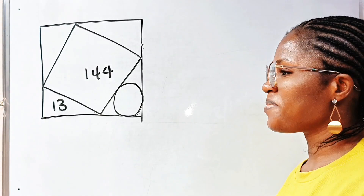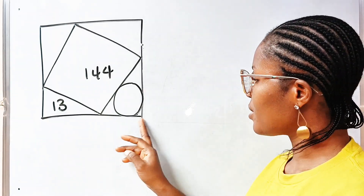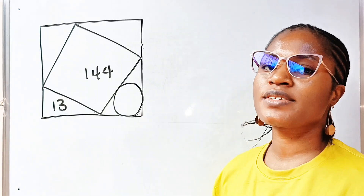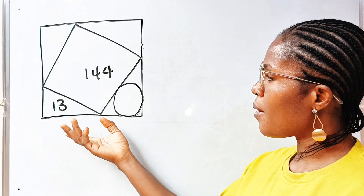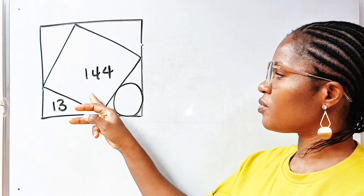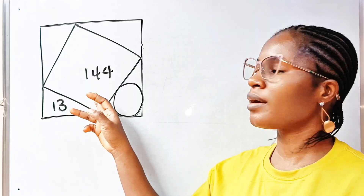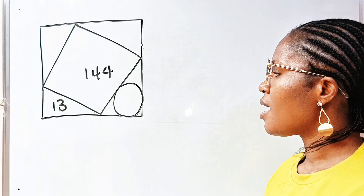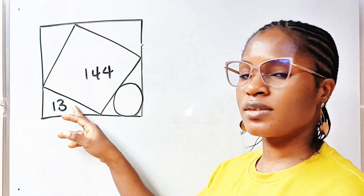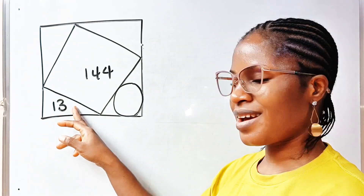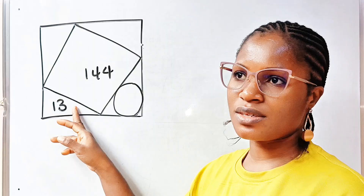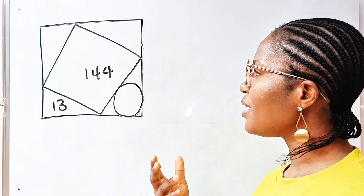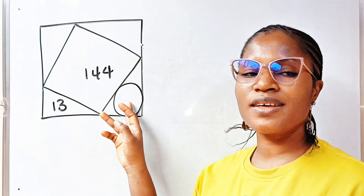Welcome back to my channel. Please, this is not drawn to scale, okay? It's not drawn to scale. The equation says that the area of the inner square is 144 square units. The area of this triangle is 13 square units. So, we are asked to find the value of the area of this circle.